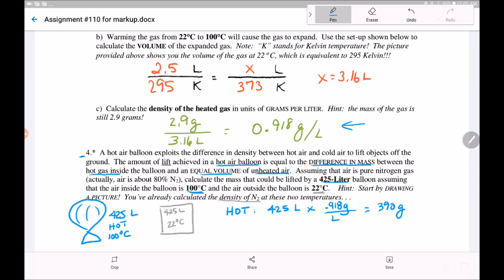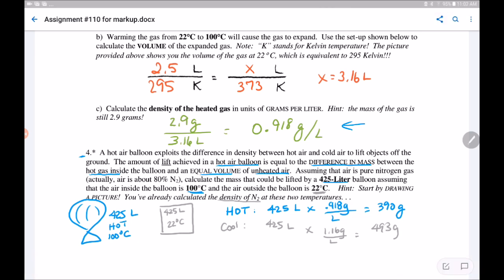How about the unheated air? That is the, I'm going to call it cool. It's still 425 liters, but it's denser air. If you did this correctly at the beginning, it's 1.16 grams per liter is the density of the 22 degrees C air. And so this comes out to be 493 grams.